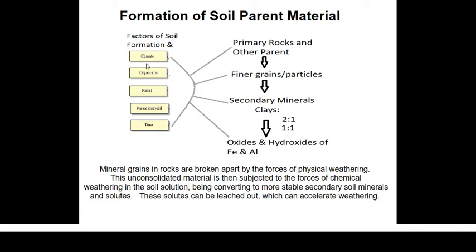For example, when we look at climate, the different components of climate include rainfall, temperature, sunlight, and wind. All those climatic factors would eventually affect the types of soils that will be produced through the process of weathering.